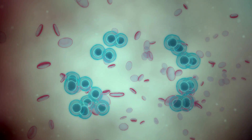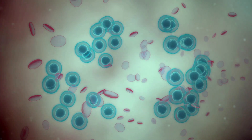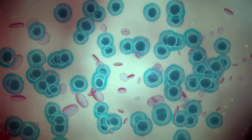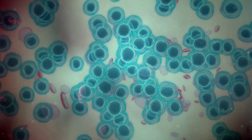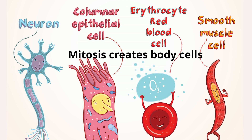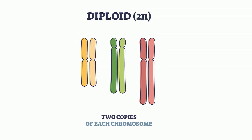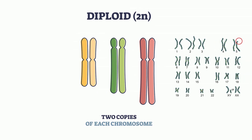They both create new cells. Both mitosis and meiosis start with diploid cells. Mitosis creates body cells that are diploid — diploid means that they have two sets of chromosomes. In humans, each body has 23 pairs of chromosomes, or 46 total.